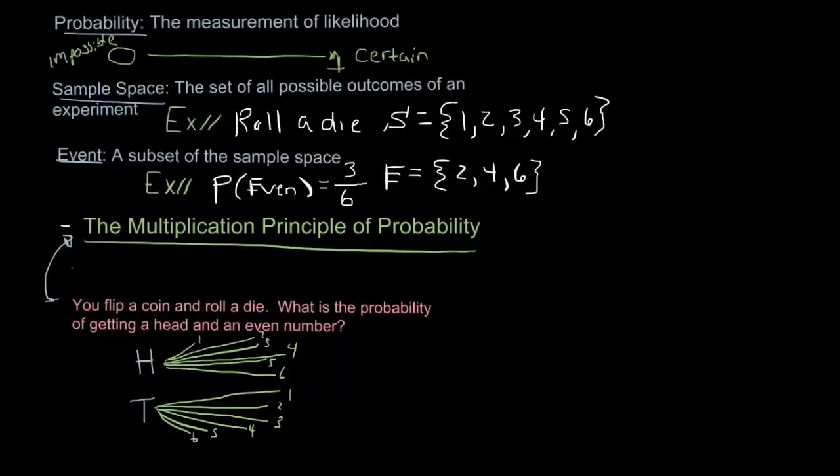Right? And so this tree diagram, in some sense, contains the whole sample space. Like, how many outcomes are there? Well, there's 12 branches, right? 6 after the head and 6 after the tail. So there's 12 total branches. So there's 12 events in the sample space.